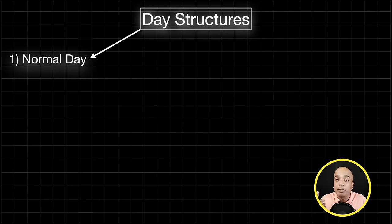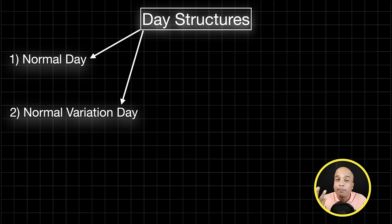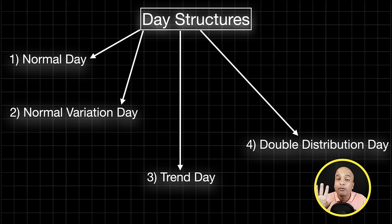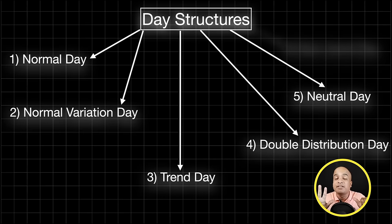The six day structures are: 1. Normal day, 2. Normal variation day, 3. Trend day, 4. Double distribution day, 5. Neutral day, 6. Non-trend day. It is important to understand how these day structures are constructed and defined to estimate the further direction in any trading day, so please pay attention to the definition of these day structures. After that, I will explain how to use this information to predict the range and direction.